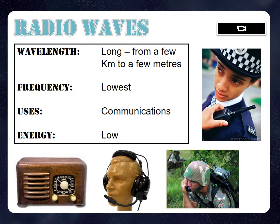Starting with the low-energy, long-wavelength waves: radio waves have long wavelengths varying between a few kilometers to a few meters. They are the lowest frequency in the electromagnetic spectrum, tend to be used for communication in radios, and have low energy.